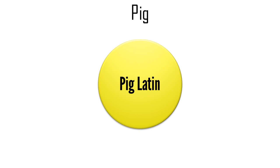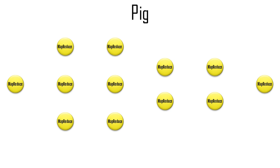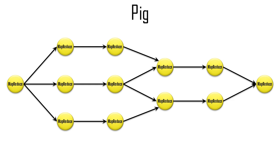Soon after Yahoo released Hadoop as an open source project, they realized how difficult it was to write data pipelines in Java using only two kinds of functions — map and reduce — so they created a higher level of abstraction named the Pig system. Pig Latin is a data flow language used to create data pipelines. Data flow languages have been around since the 1970s, and in the 1980s the term 'pipeline data flow' started to be used. After you write a data pipeline in the Pig Latin language, the Pig system automatically converts your code into a collection of Java MapReduce programs.